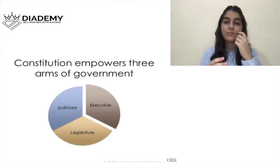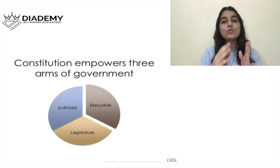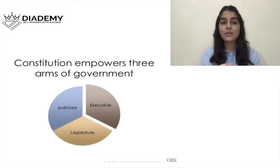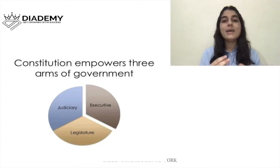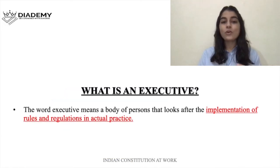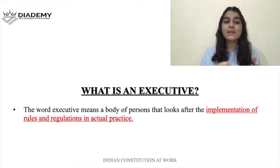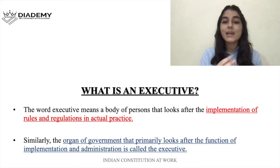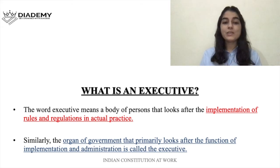The second organ is the executive, which handles all the implementation work. In this chapter we will be covering the second organ which is the executive. The word executive means a body of persons that looks after the implementation of rules and regulations in actual practice. The organ of government that primarily looks after the function of implementation and administration is called the executive.